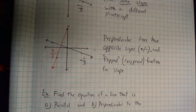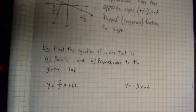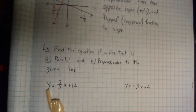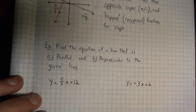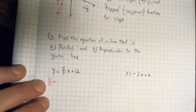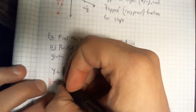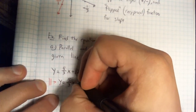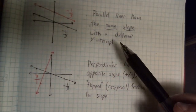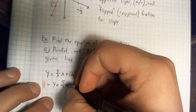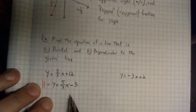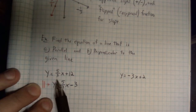Let's look at some problems. The kind of problems we're going to see ask us to find the equation of a line that is parallel and perpendicular to a given line. Here's our first example. The given line is y equals 5 over 3x plus 12. This 5 over 3 is our slope, our m value. If I'm looking for a line that's parallel, I need the same slope. So y equals 5 over 3x, but we have to have a different y-intercept. My y-intercept right now is 12, so I can pick any number as long as it's not 12. I'm going to pick negative 3. The really important thing is that we have the same slope.